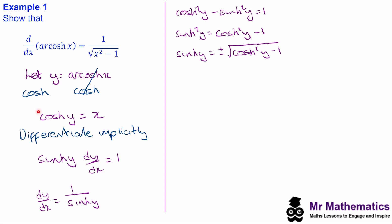And if you notice, at the start, we said cosh y is equal to x. So I can replace this cosh squared y with x. And this gives us sinh y is equal to plus or minus the square root of x squared minus 1. And I can use this expression for sinh y in our derivative. So dy by dx is equal to 1 over plus or minus the square root of x squared minus 1.